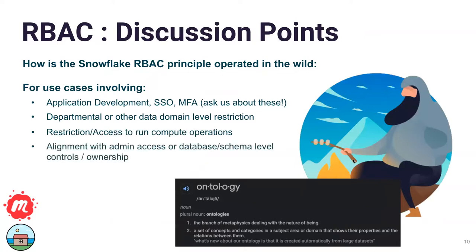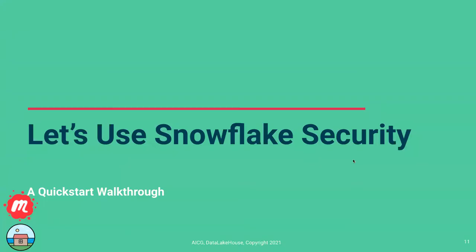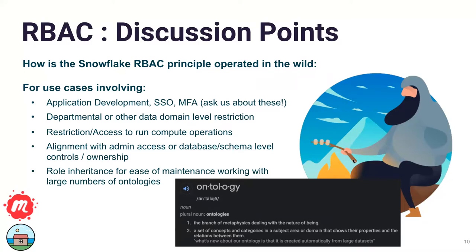When we talk about RBAC, it has loads of use cases. App dev - Snowflake has APIs you can connect to, even from custom-built applications like Node.js or Python. Single sign-on - things like Okta or Auth0 as the latest cloud-based authentication systems. Multi-factor authentication, which we'll talk about towards the end. Other use cases include departmental or domain-level restriction - some of these things are common sense, but not everybody has actually implemented RBAC security.